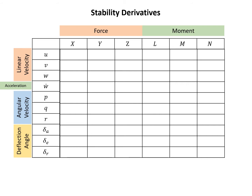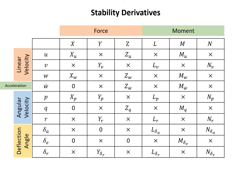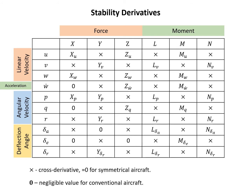We also have delta_A, delta_E, delta_R — the deflection angles. At each cross-sectional point in the table, we define a stability derivative. You may notice some entries have crosses and some have zeros. A cross means a cross-derivative, which is usually zero for symmetrical aircraft — a conventional aircraft.